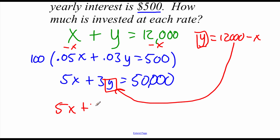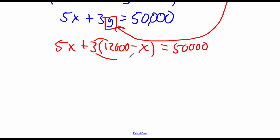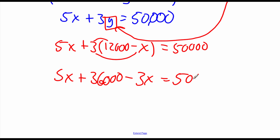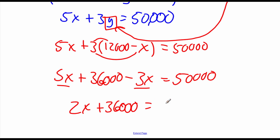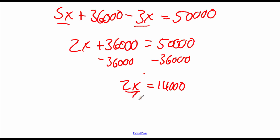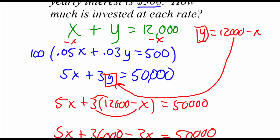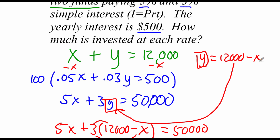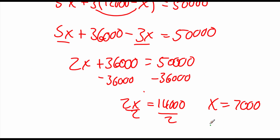So we get 5x plus 3 times (12,000 minus x) equals 50,000. Distributing the 3 gives 5x plus 36,000 minus 3x equals 50,000. Combining like terms: 2x plus 36,000 equals 50,000. Subtracting 36,000 gives 2x equals 14,000, and dividing by 2 gives x equals 7,000. Going back to y equals 12,000 minus x, substituting 7,000 gives y equals 5,000.